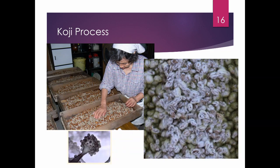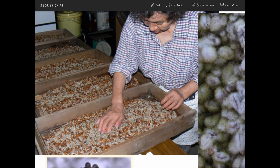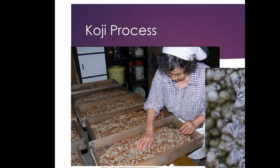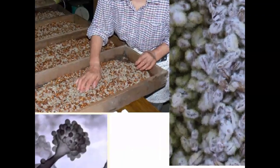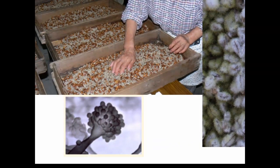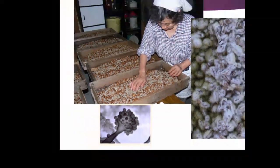An example of solid-state fermentation is the koji process, one of the first steps in producing soy sauce. You grow a fungus on the surface of soybeans. Shown here is an example of solid-state fermentation trays where soybeans are being fermented, with mycelial growth visible on the surface of the beans. The beans are not submerged in liquid — this is solid-state. The soybeans are coated in mycelium during the fermentation step, and a microscopic view of the fungus is also shown.